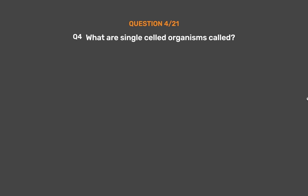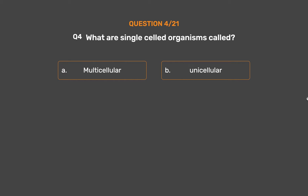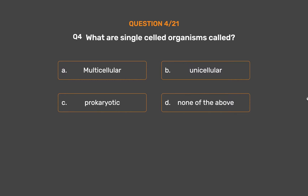Question No. 4: What are single-celled organisms called? Option A: Multicellular. Option B: Unicellular. Option C: Prokaryotic. Option D: None of the above.